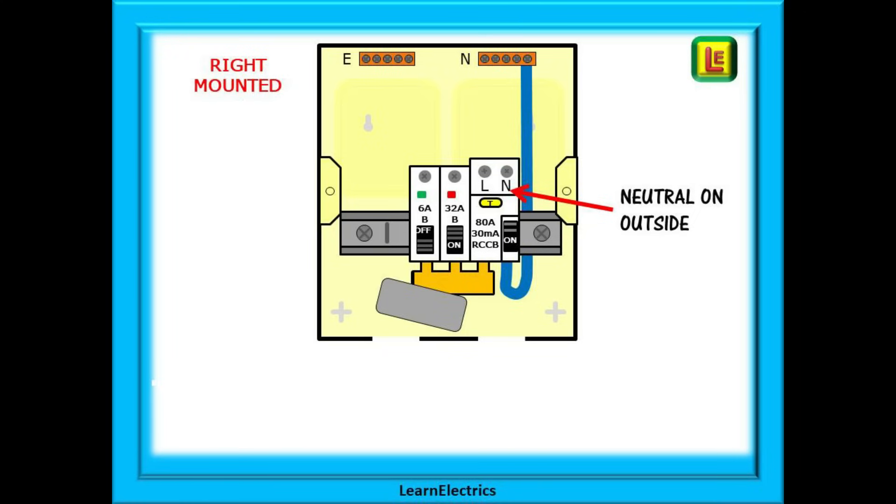By keeping the neutral on the outside this allows us to use the bus bar to connect together the RCD and the MCBs.